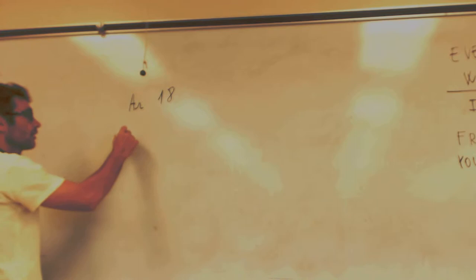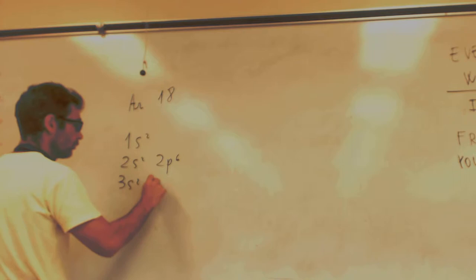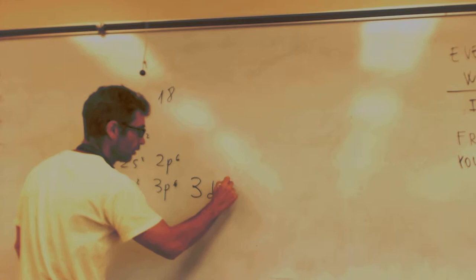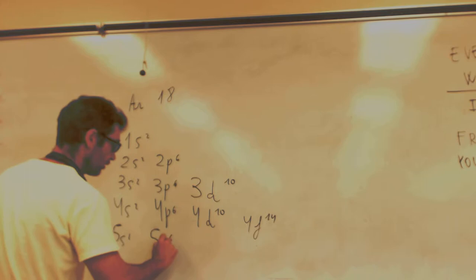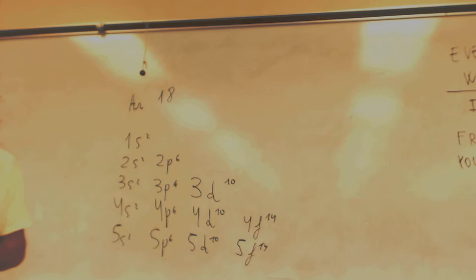I'm going to do it from model style rank. 1s2, 2s2, 2p6, 3s2, 3p6, 3d10, 4s2, 4p6, 4f14, 5s2, 5p6, 5d10, 5f14.